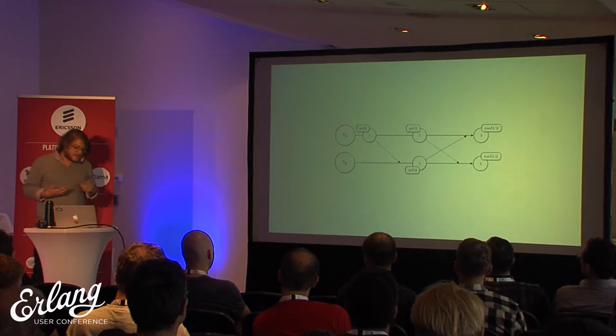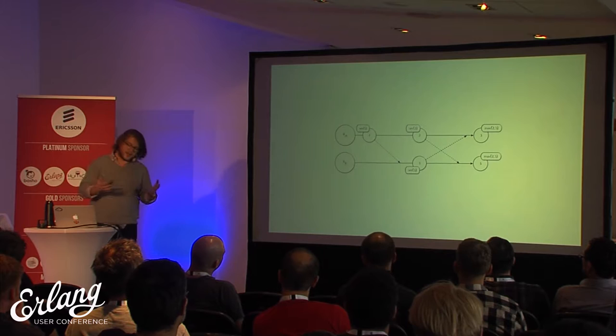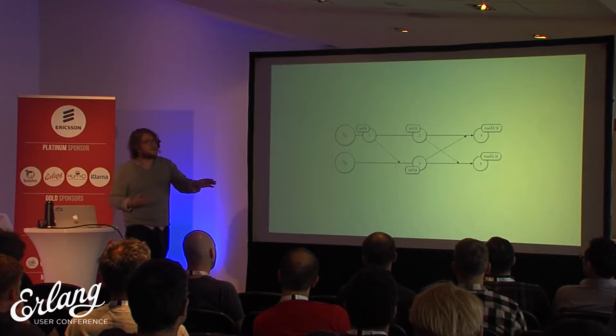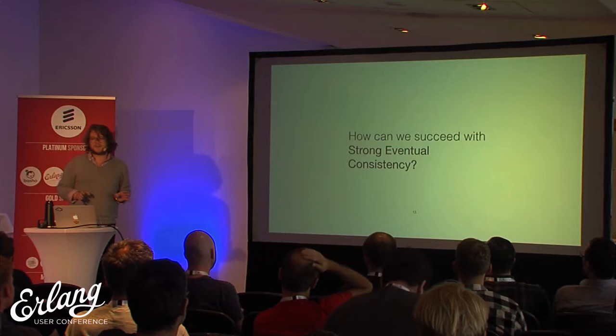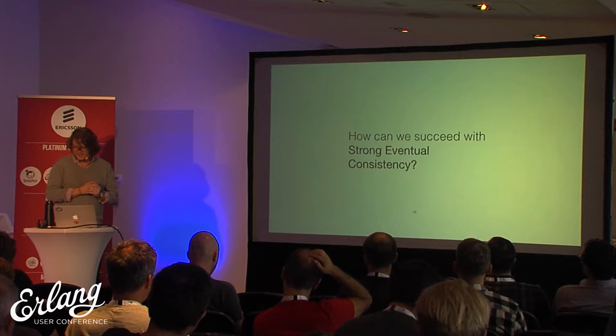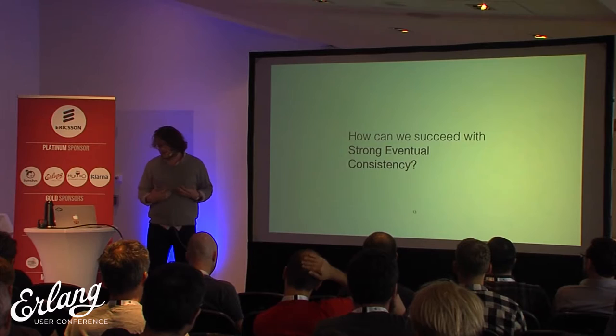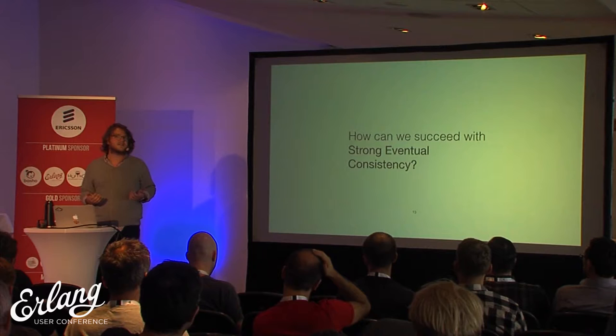A trivial example of fulfilling this property with natural numbers is using the max function. The mathematical properties that allow this are that max is monotonic and over naturals you can form a semi-lattice. Because of this math, regardless of how you reorder any arrows in the execution, you get the same result. You shouldn't have to know how this works as a programmer — that's our job as researchers to build abstractions around this so you get the benefits.